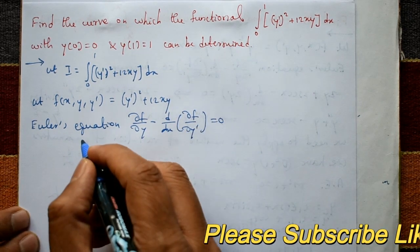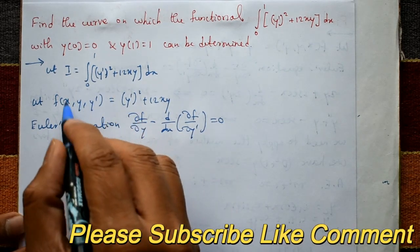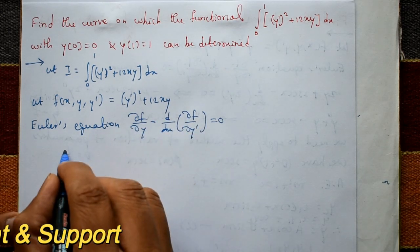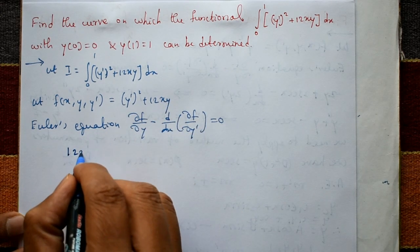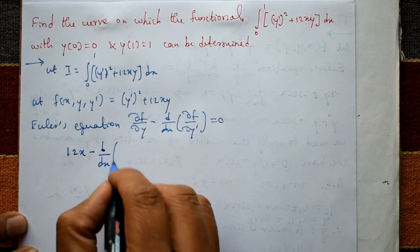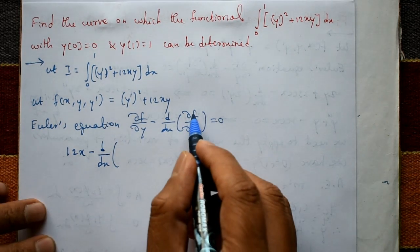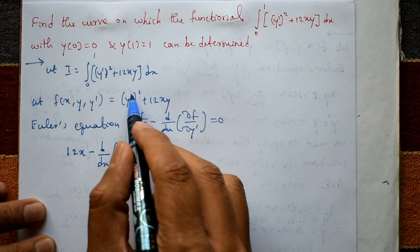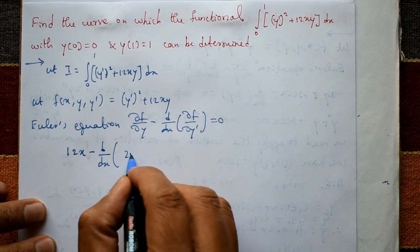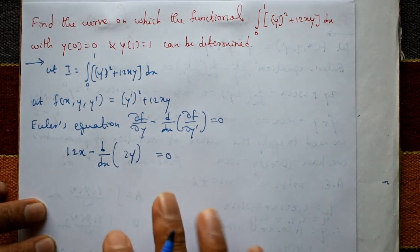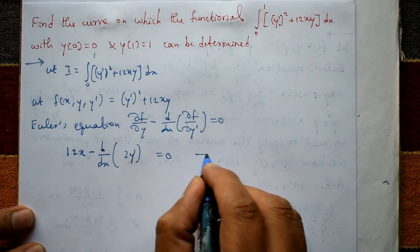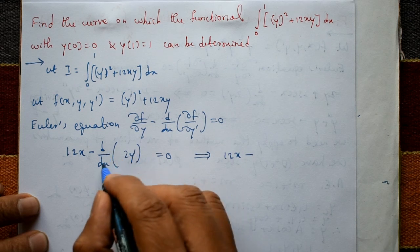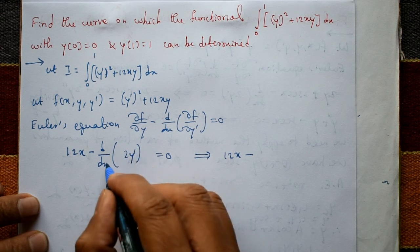Differentiating F with respect to y only: the term 12xy differentiated with respect to y gives 12x. Then, minus d/dx of the derivative of F with respect to y': differentiating y' squared with respect to y' only (treating x and y as constants) gives 2y'. So the equation becomes 12x minus d/dx of 2y' = 0.